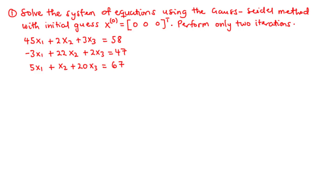What happens is that for the Gauss-Seidel iteration method, each variable is updated as soon as a new value is available. This leads to faster convergence, and that is exactly what we are going to do in today's lesson.